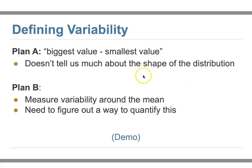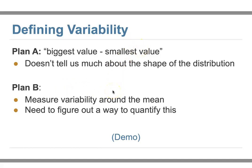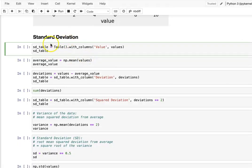One approach to measure variability is to subtract the smallest number from the biggest number — that gives us the range. But the range only tells us how wide the data is; it doesn't describe the shape of the distribution. A better plan is to measure variability around the mean, since the mean is the balance point of the distribution. If we can see how far all the numbers are from the mean, we can better understand the distribution and quantify its variability.